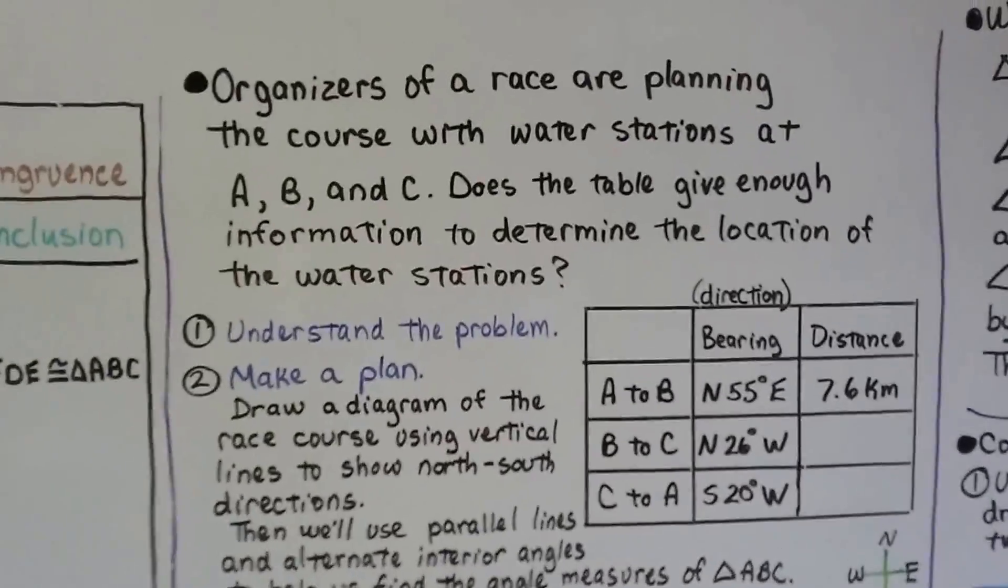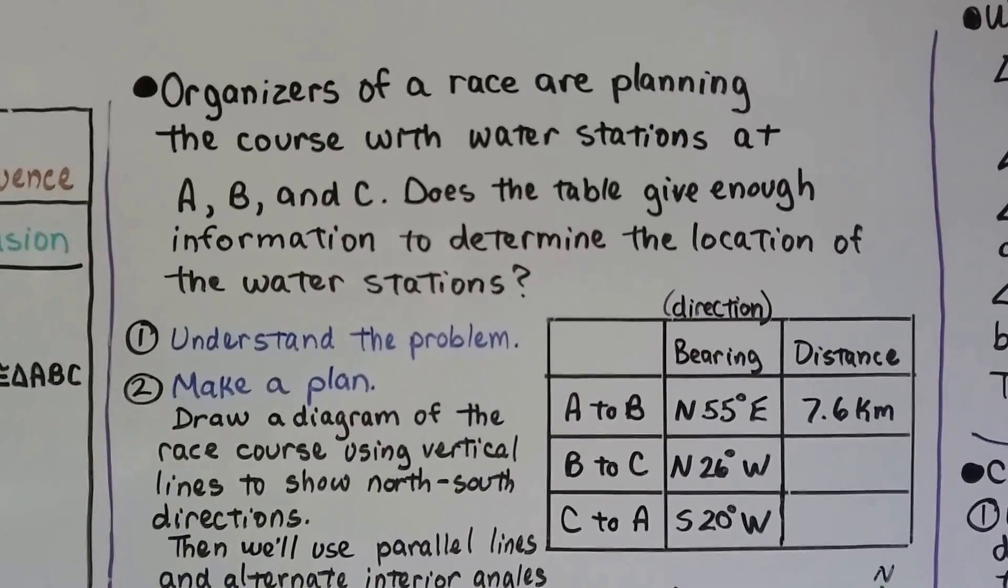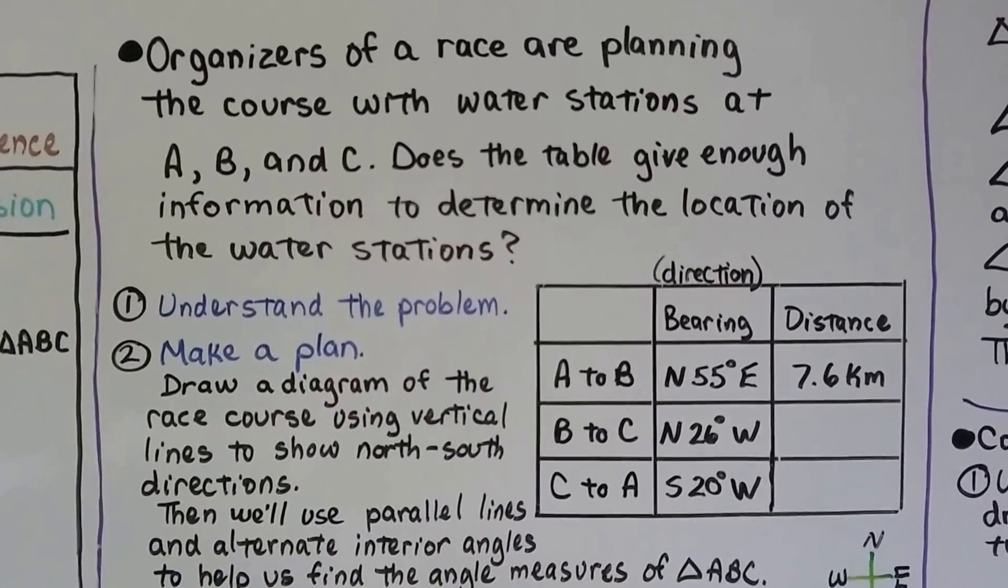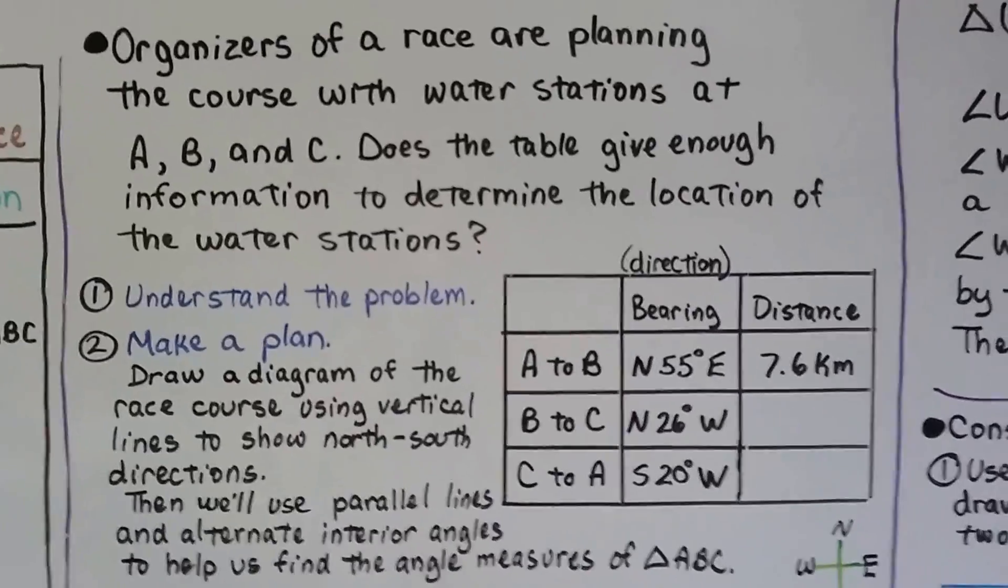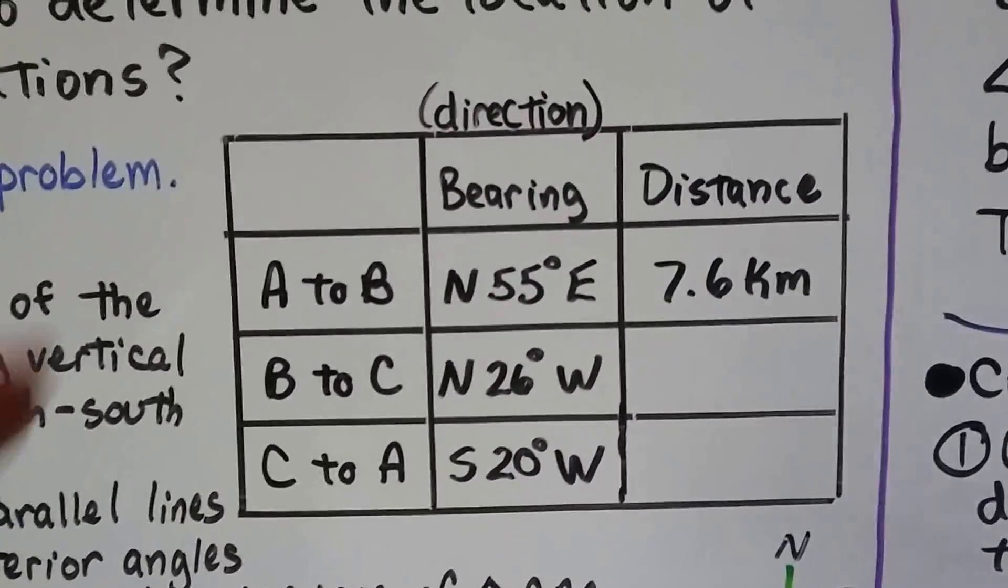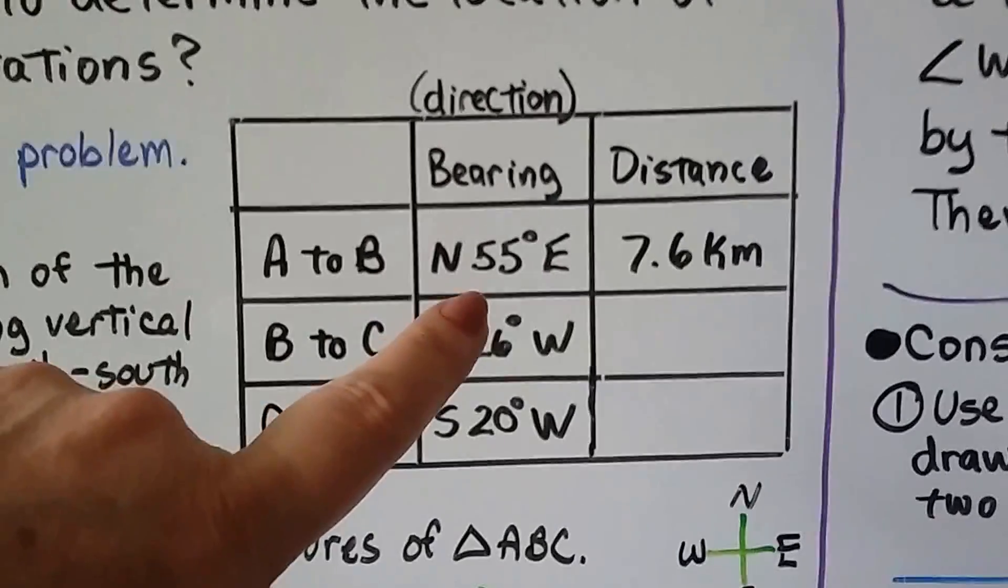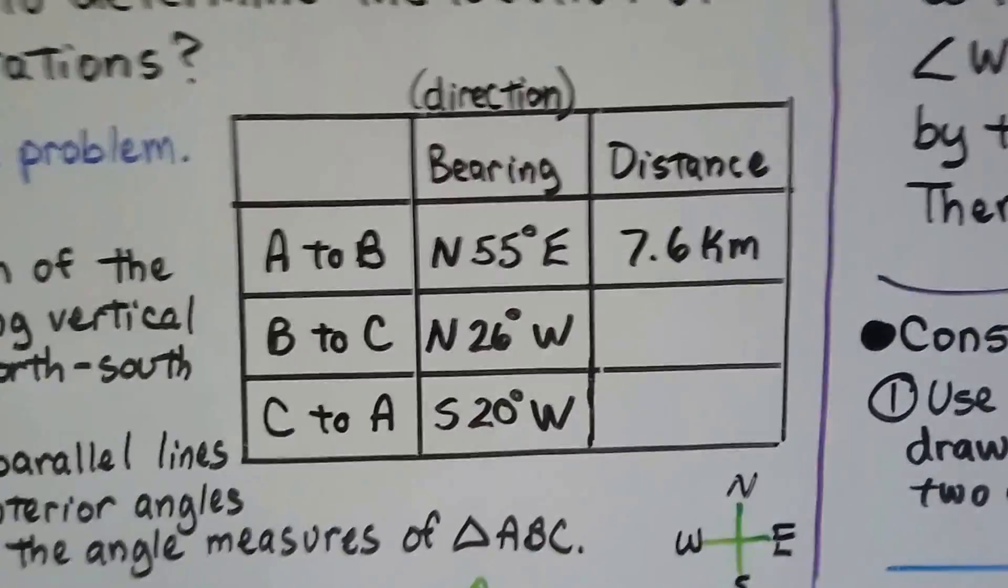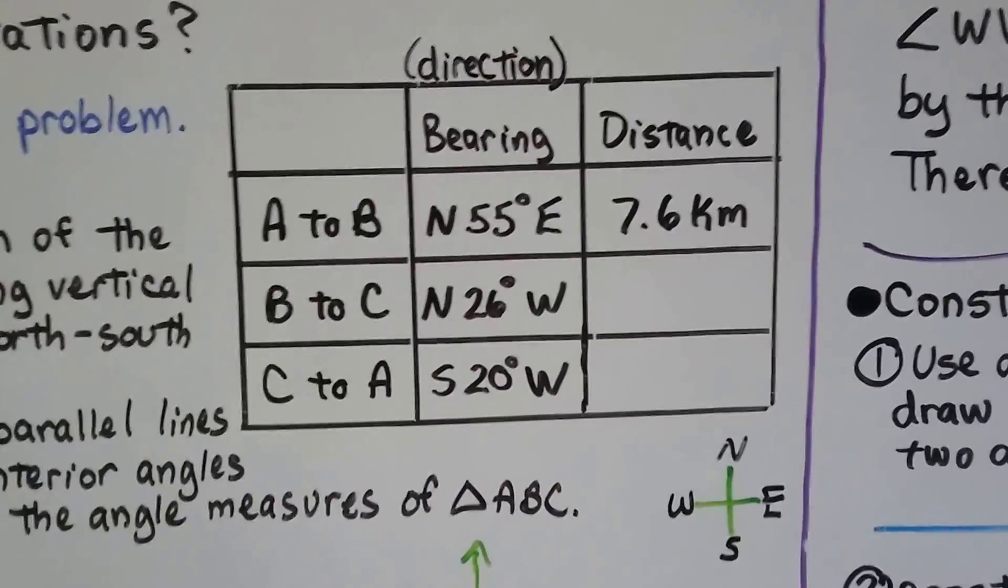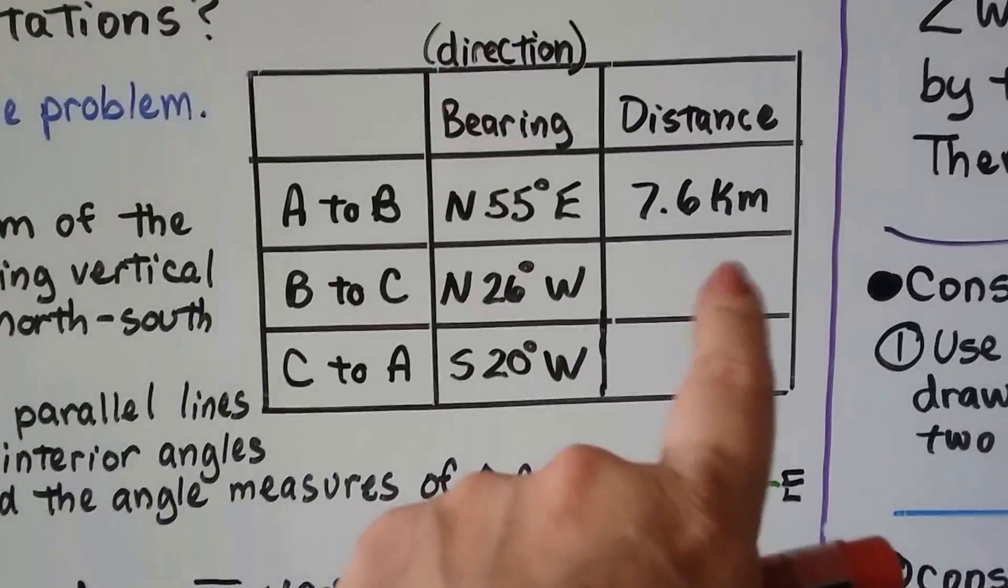Here's our example. Organizers of a race are planning the course with water stations at A, B, and C. Does this table give enough information to determine the location of the water stations? We need to understand the problem. We've got bearings, which are directions, and distance. From A to B is north 55 degrees east with a distance of 7.6 kilometers, B to C is north 26 degrees west, and C to A is south 20 degrees west.